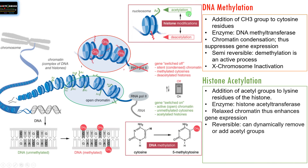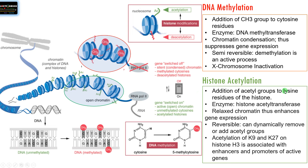Histone acetylation causes relaxation of the chromatin leading to gene expression — genes are turned on. Examples include acetylation of K9 and K27 on histone H3, which is associated with enhancers and promoters of active genes.